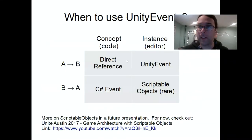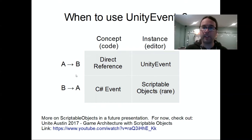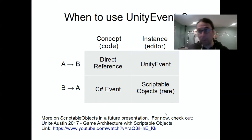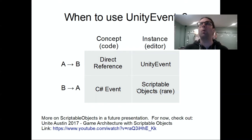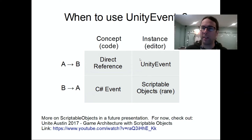Using those two questions, you can pick the right approach from a simple table. Concepts connected, causality direction matches dependency: use a direct reference. Concepts connected but reversed: use a C# event. Instance-to-instance, neither concept depends on the other: use a Unity Event. Instance-to-instance but reversed: use the ScriptableObject approach. That last quadrant is extremely rare, and since instance connections make dependency direction arbitrary, Unity Events — being simpler and lower overhead — are usually the better choice there too.